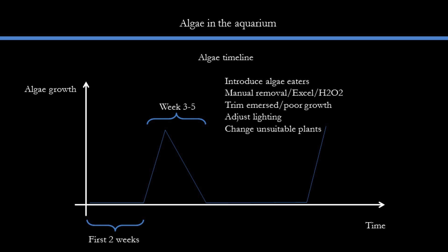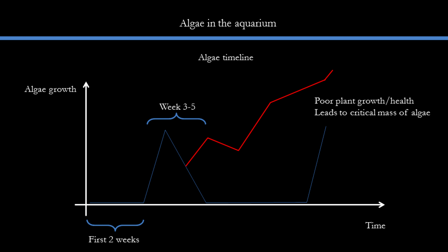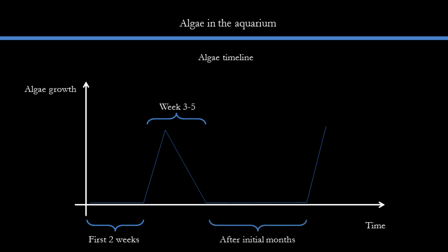We can also preemptively treat any algae that is present and introduce algae eaters at this point — early treatment is good. It is important to not let certain types of algae gain critical mass, such as BBA or Cladophora, as they will be very tough to remove later on. If the situation is handled well, the tank will go into a stable growth mode, which might take anywhere from six to seven weeks to a couple of months if the tank is slower.